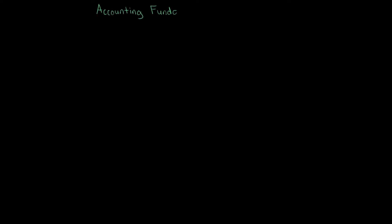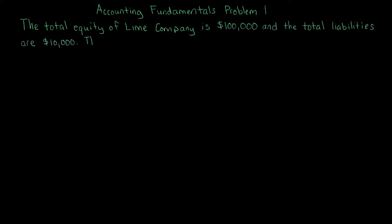Accounting fundamentals problem one: The total equity of Lime Company is $100,000 and the total liabilities are $10,000. The total assets are how much? This is a very straightforward question. It's really just asking for the accounting equation, which is Assets equals Liabilities plus Equity.